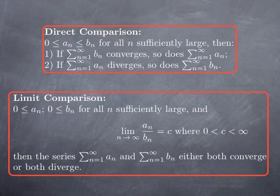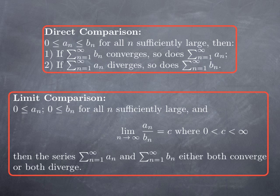For limit comparison, we look at two sequences of eventually non-negative terms where the limit of the ratio a_n / b_n is a positive constant. Then the two series behave the same. So you need to find b_n such that the limit of the ratio is a non-zero constant and such that you can easily decide whether the series of b_n is convergent or not. Typically b_n is going to be a p-series or a geometric series.